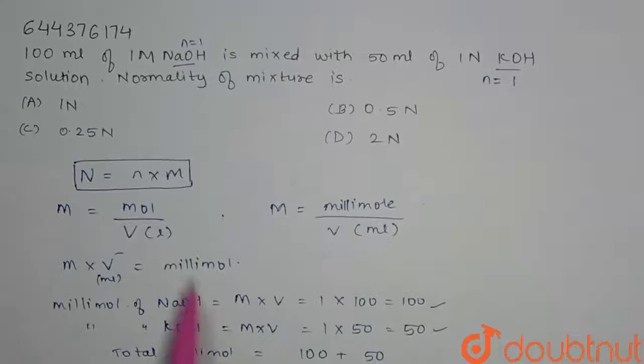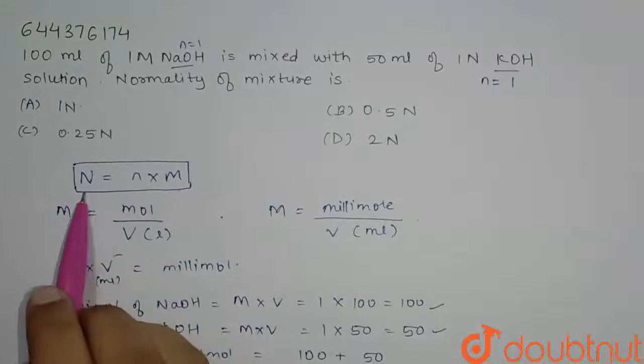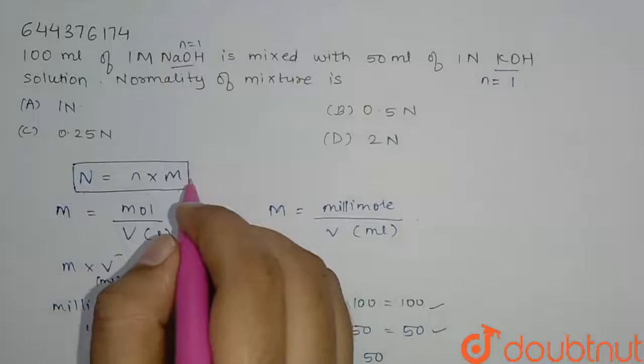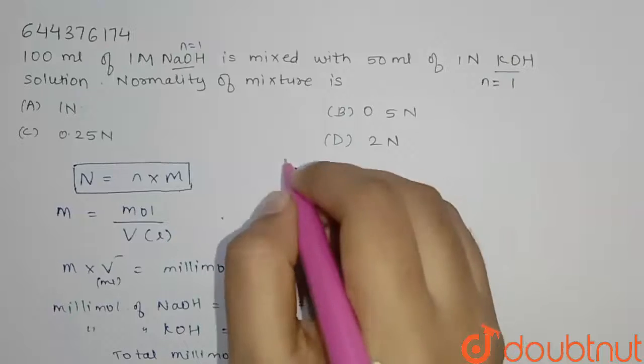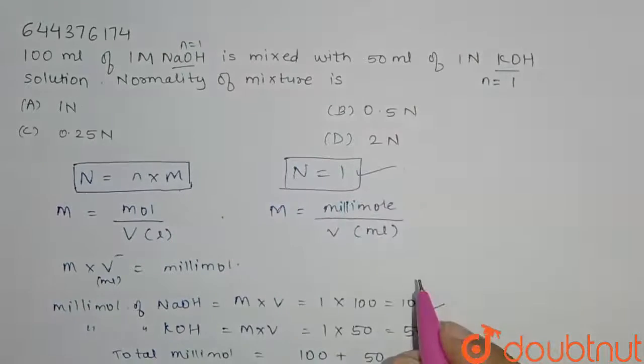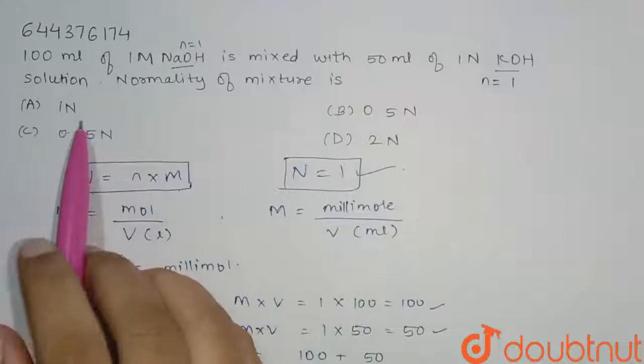So here we have seen that our normality will be directly equal to molarity. So it becomes our normality also equals 1. So if we compare this with options, our option A is correct, that is 1 normal.